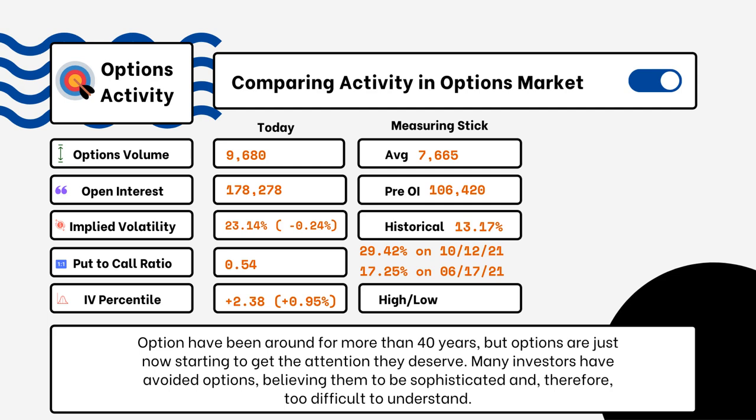When looking at put-to-call ratios, if we see anything above one, that is telling us there is more bearish sentiment in the market rather than bullish. If we see something more like 0.5 or 0.7, that tells us it's more bullish than bearish — this indicates there are more calls being purchased rather than puts.